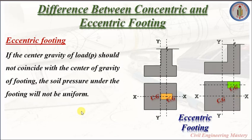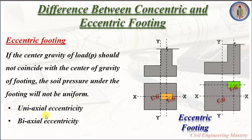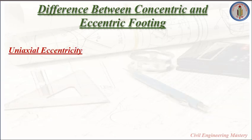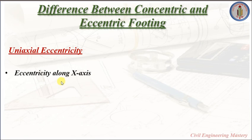In eccentric footing, we have two cases: one is uniaxial eccentricity and the other is biaxial eccentricity. Let us discuss how to differentiate uniaxial eccentricity and biaxial eccentricity. In uniaxial eccentricity, we have two cases: eccentricity along the x-axis and eccentricity along the y-axis. First, let's see eccentricity along the x-axis.